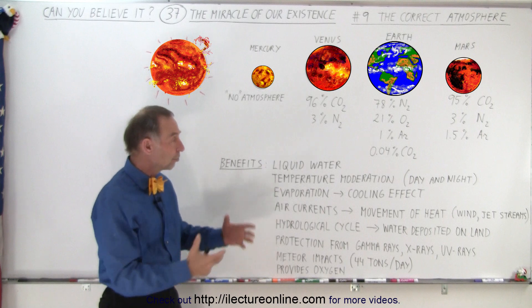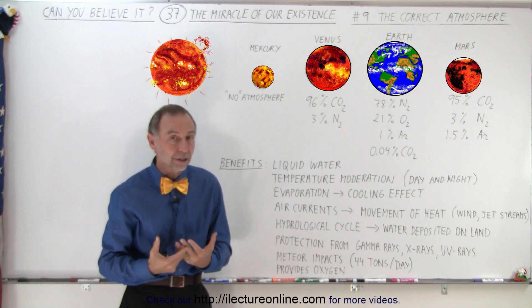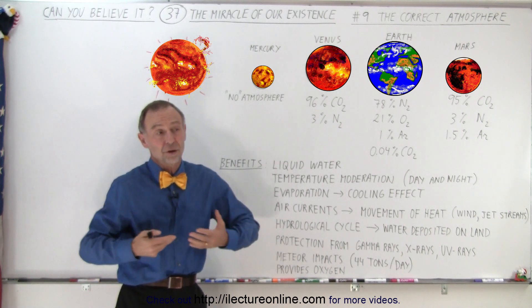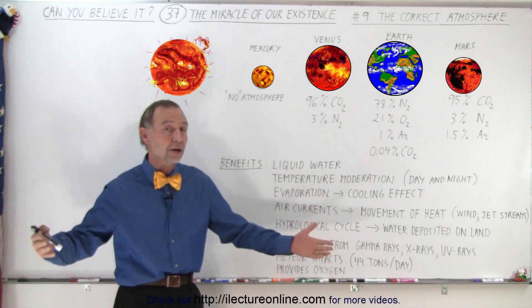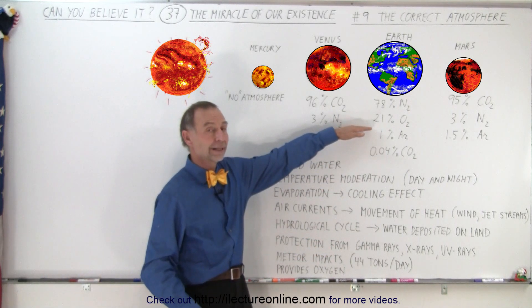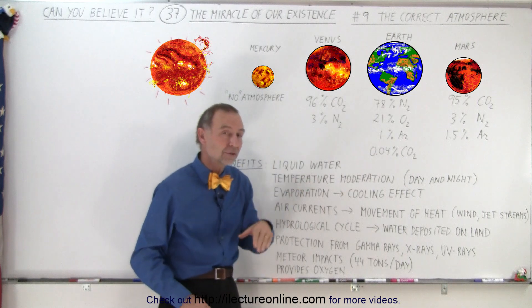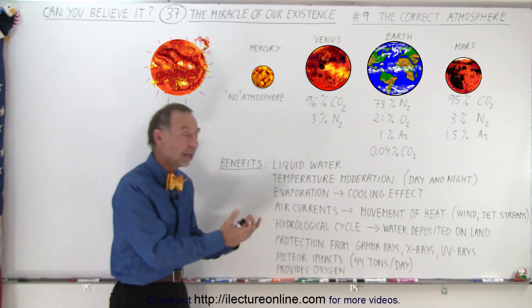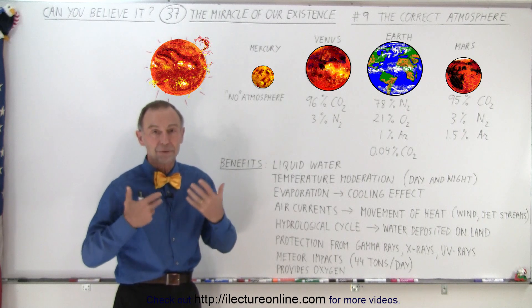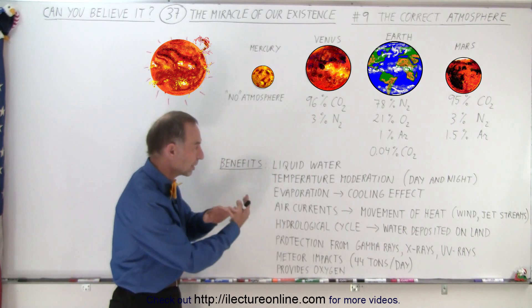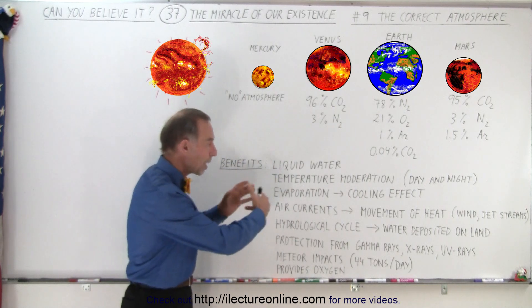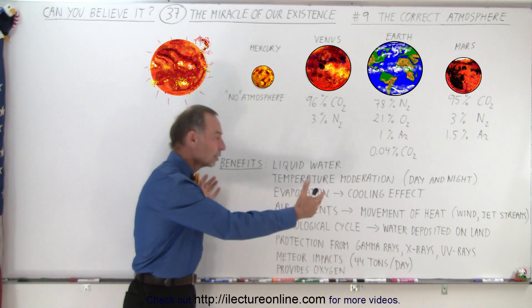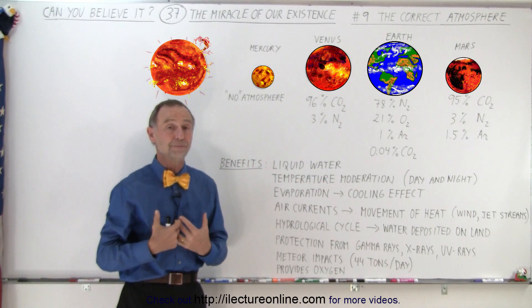And finally, it is a source of oxygen. We couldn't live without oxygen. No animal life could live without oxygen. We need that oxygen, and our atmosphere contains 21% oxygen. So it's a perfect content, not too much, not too little, for us to be able to have a planet with an atmosphere protecting us against all these things, moderating the temperatures, providing liquid water, and providing a source of oxygen.